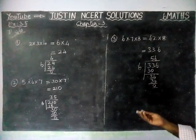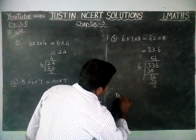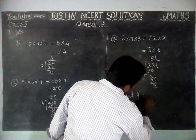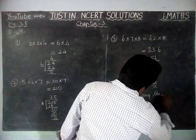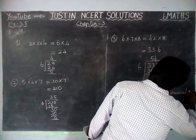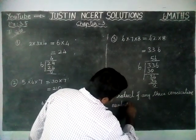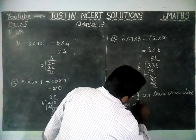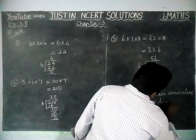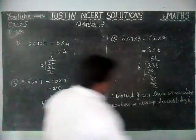So that statement is true. Therefore, the product of any 3 consecutive numbers is always divisible by 6.